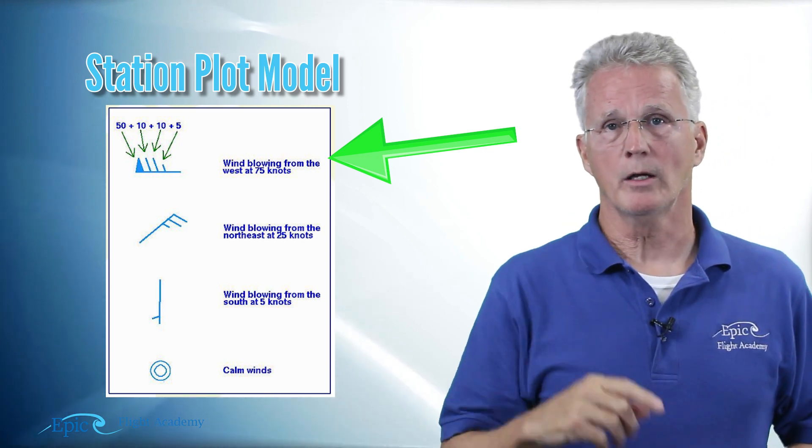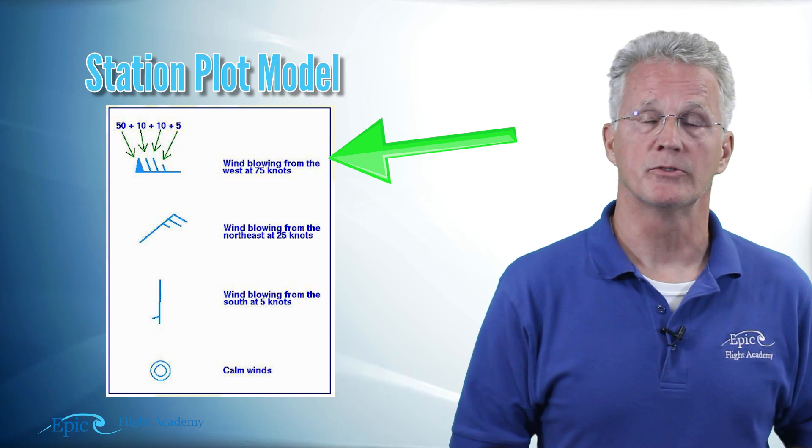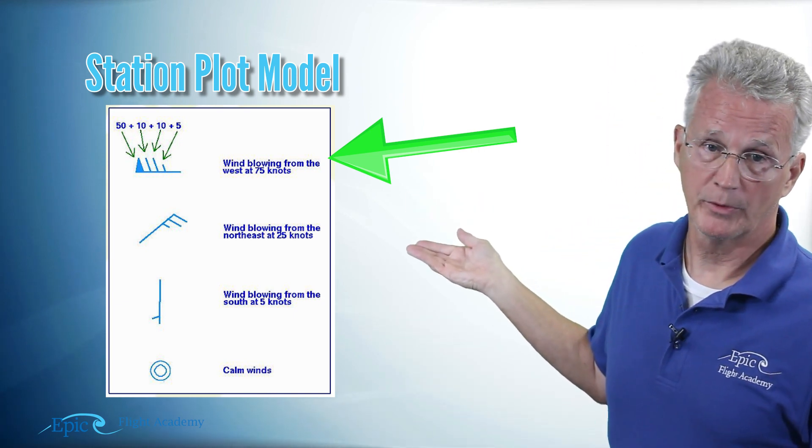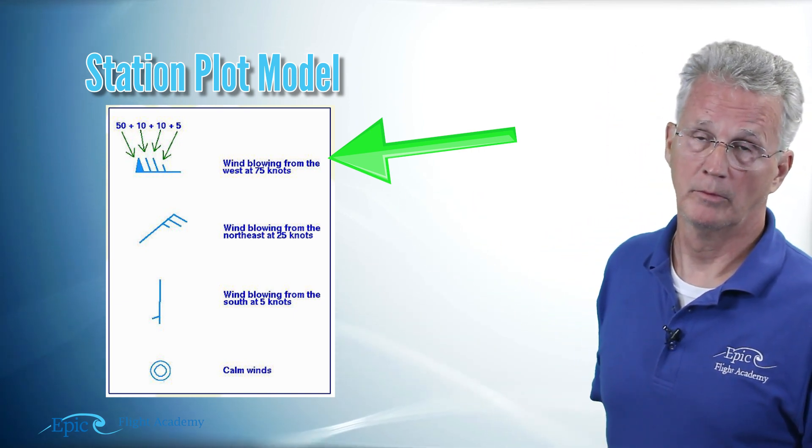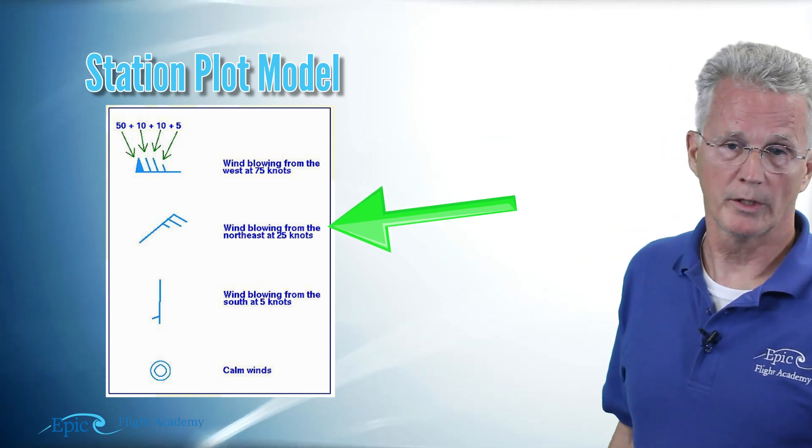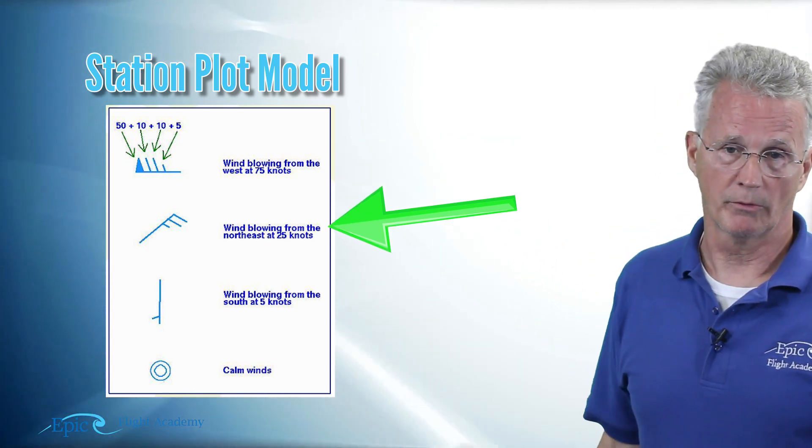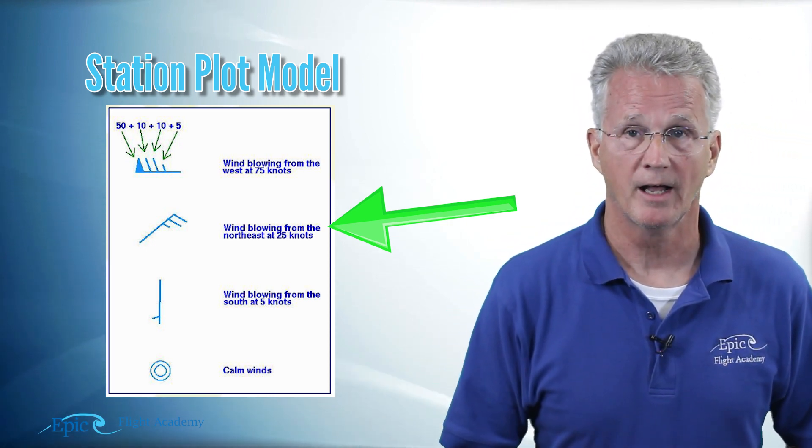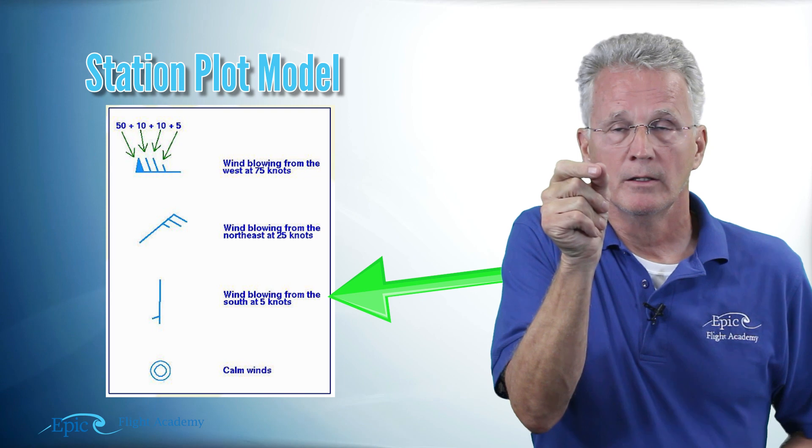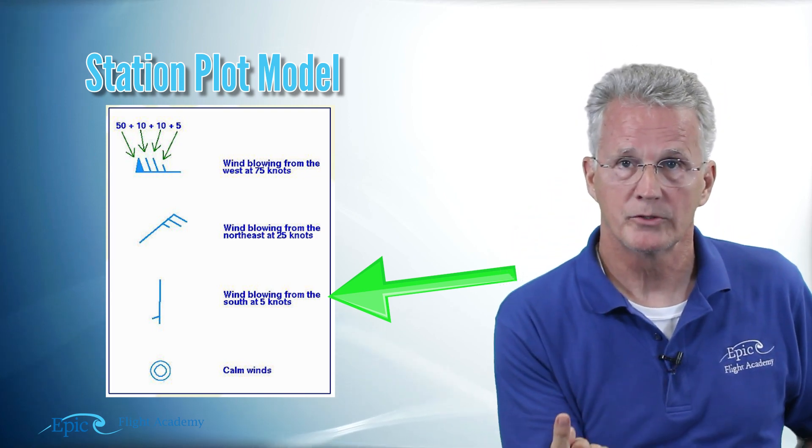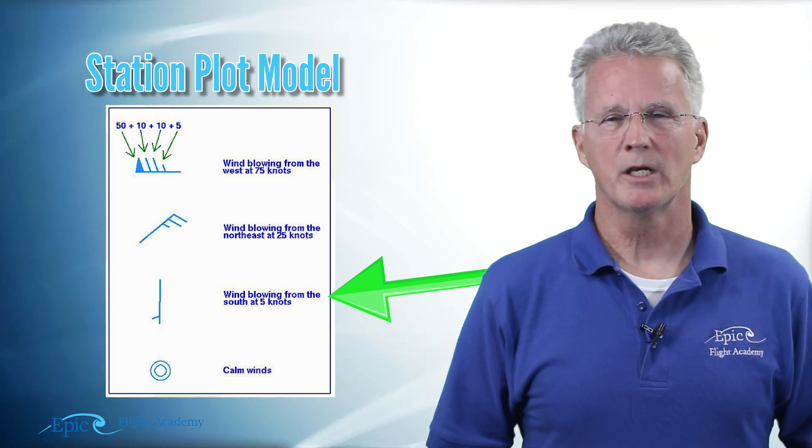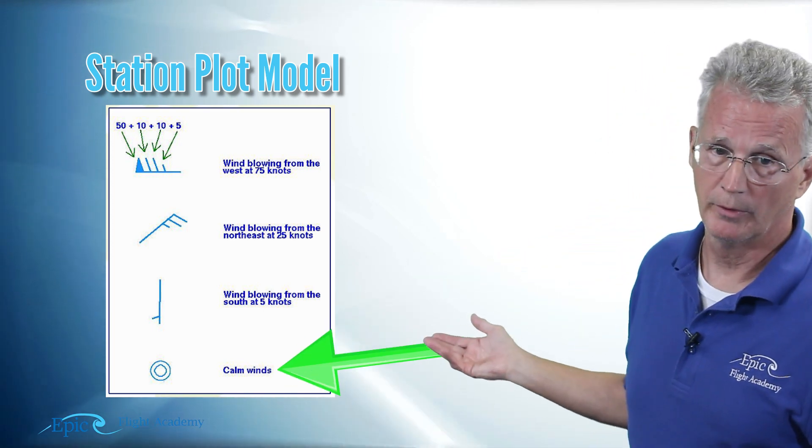Now those long tails mean 10 knots, the short tail means 5 knots. Well how about that triangle? That means 50. So up at the top here we see a triangle, long, long, short. That's 50, 60, 75. That's a 75 knot wind. Look at the one right below it, this is showing the wind from a north easterly direction and it's showing it at about 25 knots. The third one down, if that tail were coming off our station plot, shows that wind is coming from the south, a fairly light wind of about five knots. And what would that station plot look like if there were no wind? And that's our fourth example: a circle within a circle, calm winds.